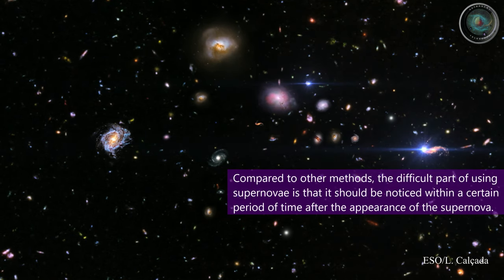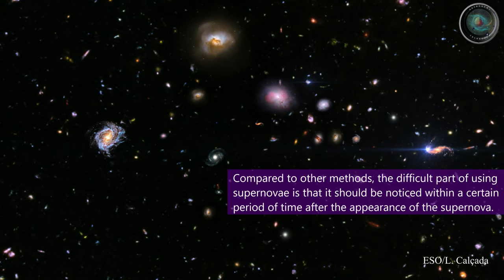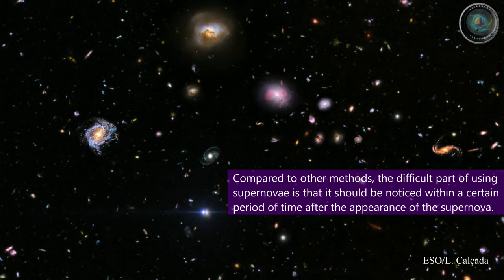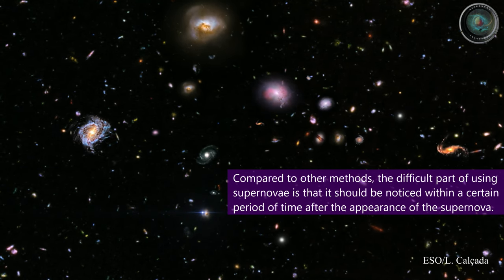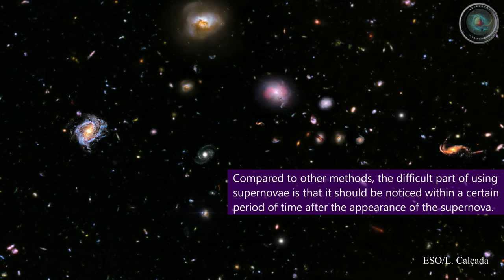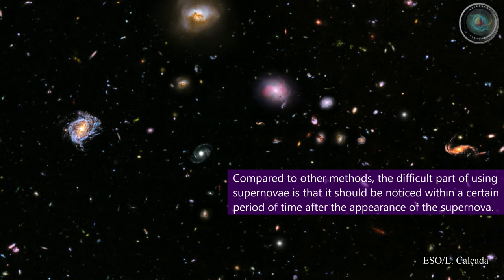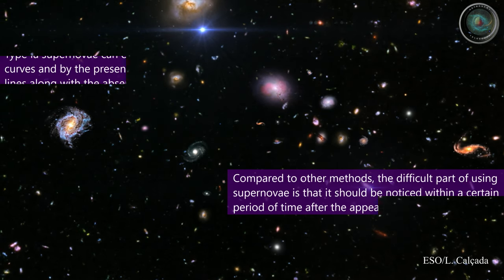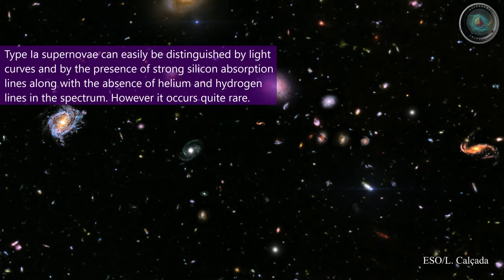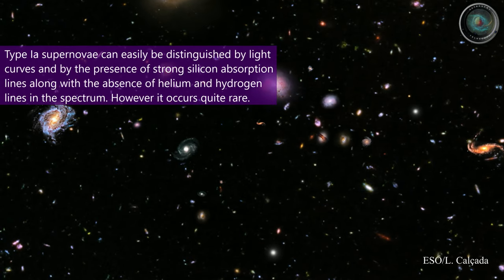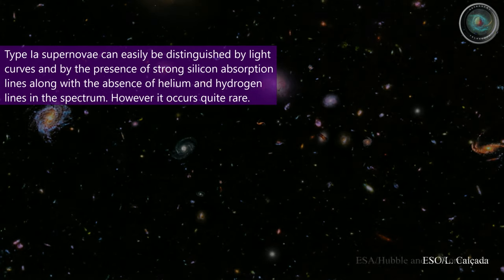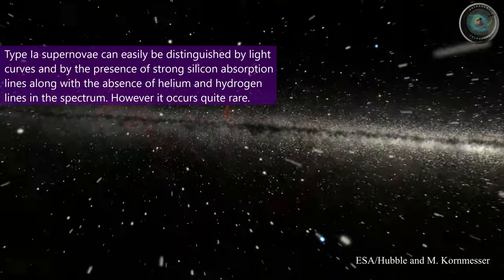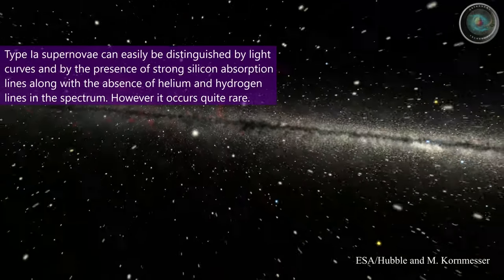Compared to other methods, the difficult part of using supernovae is that the supernova should be noticed within a certain period of time after its appearance. Type 1A supernovae can easily be distinguished by light curves and by the presence of strong silicon absorption lines, along with the absence of helium and hydrogen lines in the spectrum.